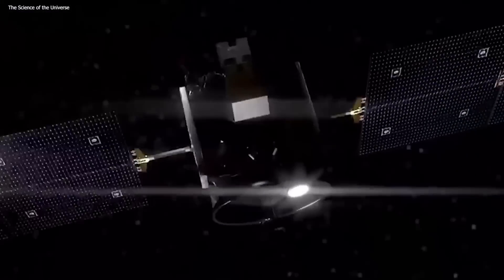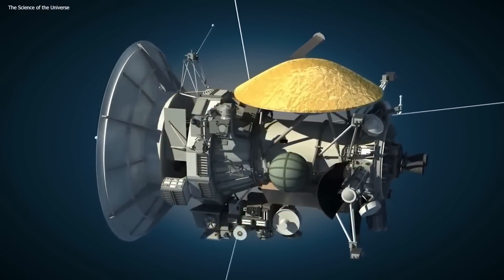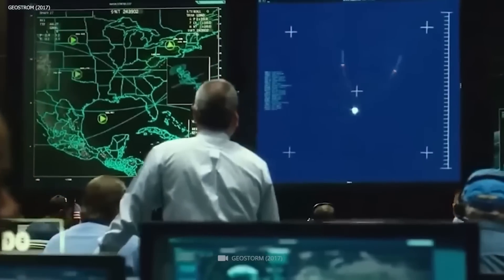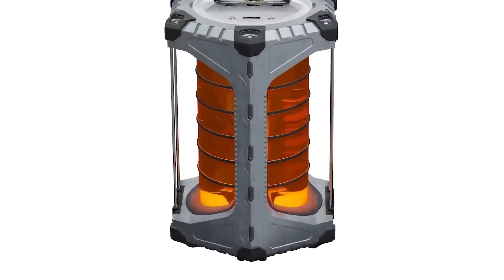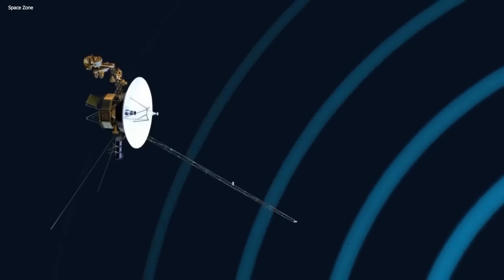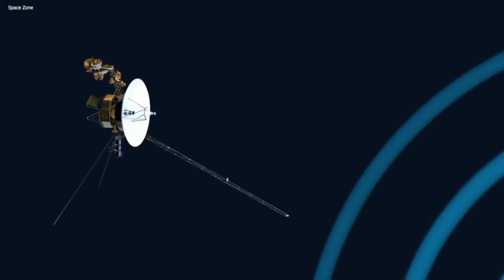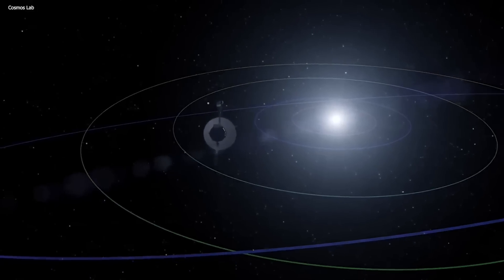To conserve energy, non-essential systems and instruments have been deactivated or put into a dormant state. As power continues to decline, critical systems may require further optimization or shut down to prolong Voyager 1's operational lifespan.